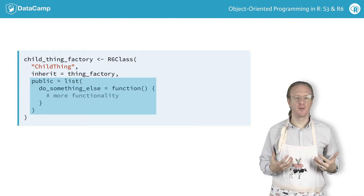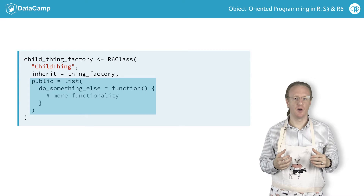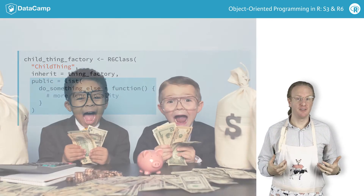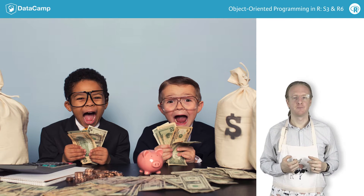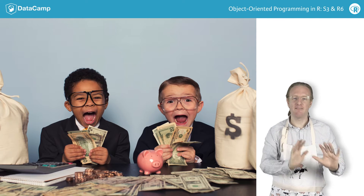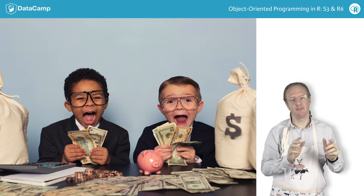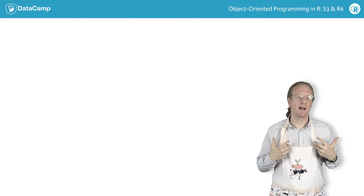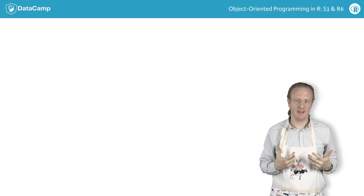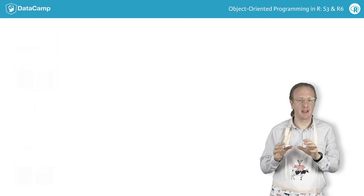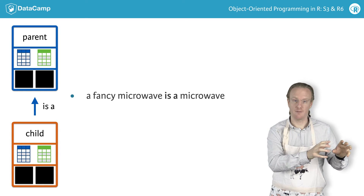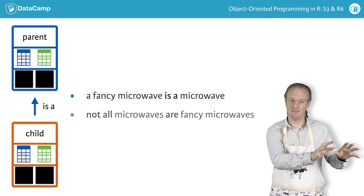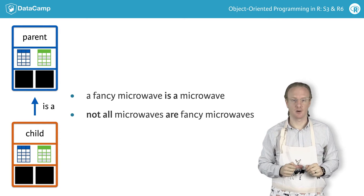The important thing to remember is that inheritance only works in one direction. If you're a parent, this will probably sound familiar: children take everything from their parent, but the parent doesn't get anything back. When you talk about the relationship between microwaves, you can say that a fancy microwave is a microwave, but the converse doesn't hold — it wouldn't be true to say that any microwave is a fancy microwave.